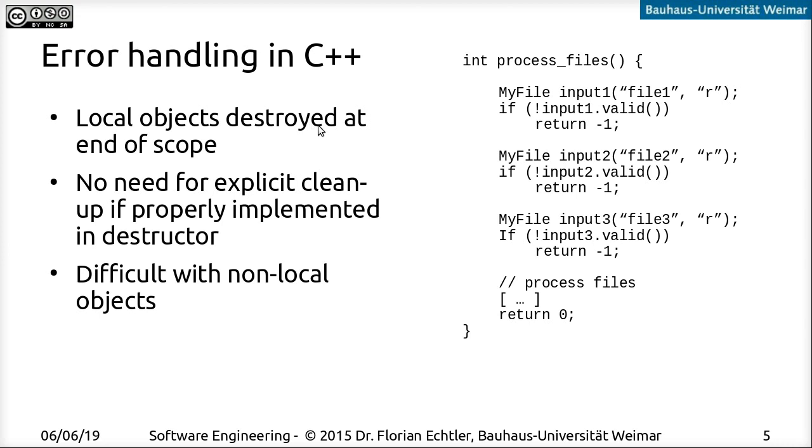And C++ being object oriented now gives us a better approach to do that in general. For example, because all local objects, which I create inside a function, just as in Java, are actually destroyed automatically when the scope, so the outer function basically ends. And therefore, if these file objects, for example, which I'm using here now, these file classes have a properly implemented destructor cleanup code,